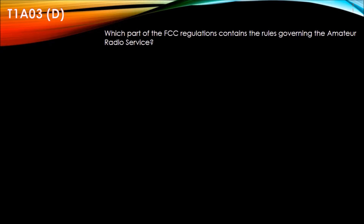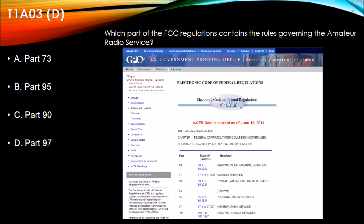Question T1A03: Which part of the FCC regulations contains the rules governing the amateur radio service? Answers are A. Part 73, B. Part 95, C. Part 90, D. Part 97. Again we return to the Electronic Code of Federal Regulations, and we see that it is Part 97 Amateur Radio Service, which makes the answer to this question D, Part 97.